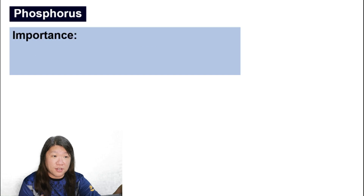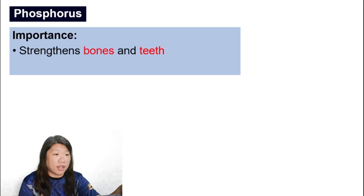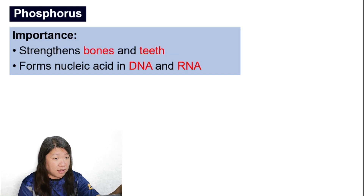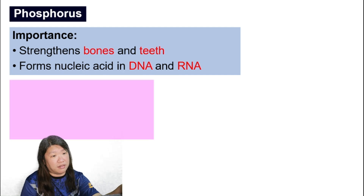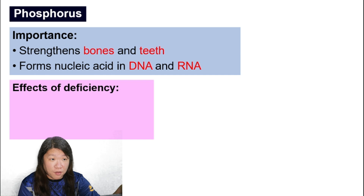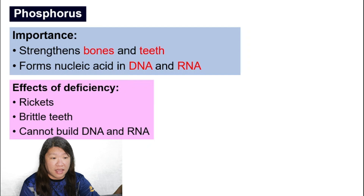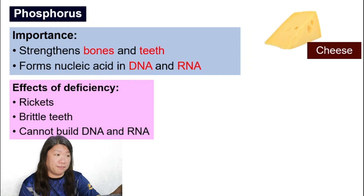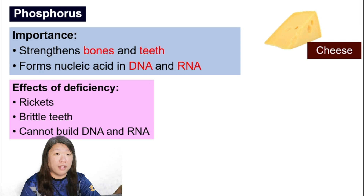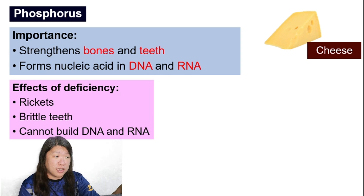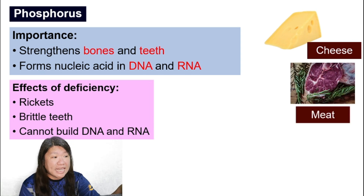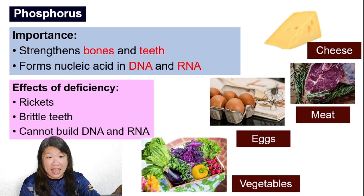Phosphorus is important for strengthening bones and teeth and for forming nucleic acid in DNA and RNA. Not having enough phosphorus can cause rickets, brittle teeth — meaning your teeth break easily — and the inability to build RNA and DNA. Sources of phosphorus include cheese, meat, eggs, and vegetables.